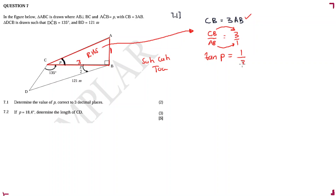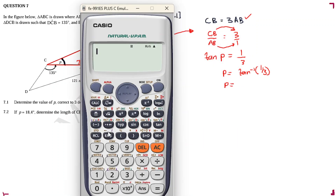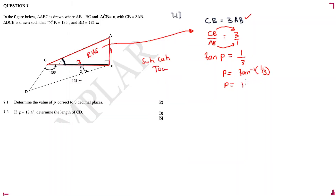Using SOH-CAH-TOA: tan P equals opposite over adjacent, which is 1 over 3. Therefore P equals arctan(1/3). Calculating: shift tan of one over three gives 18.43 degrees. So angle P is equal to 18.43 degrees.